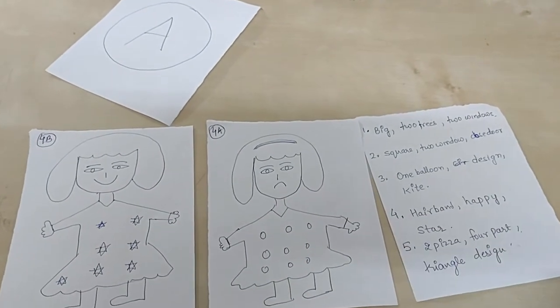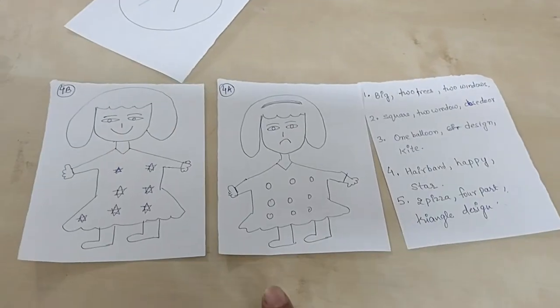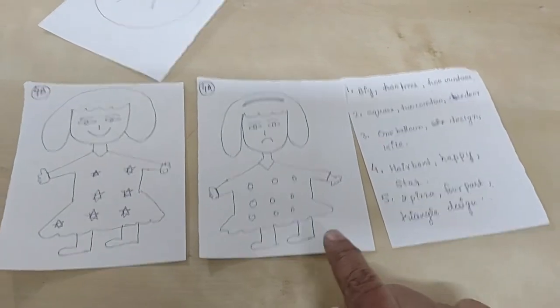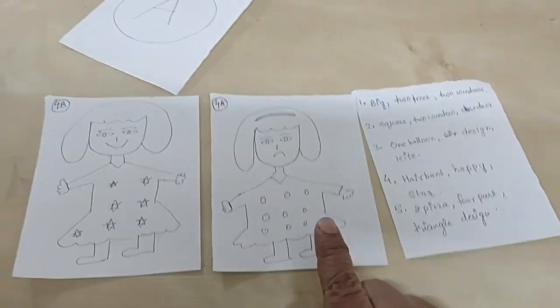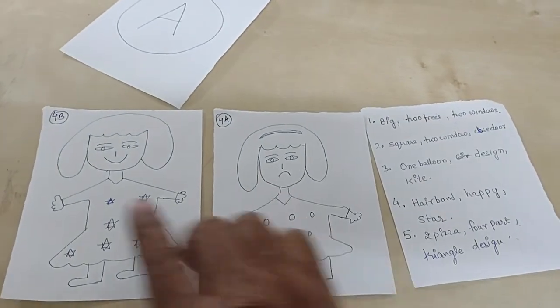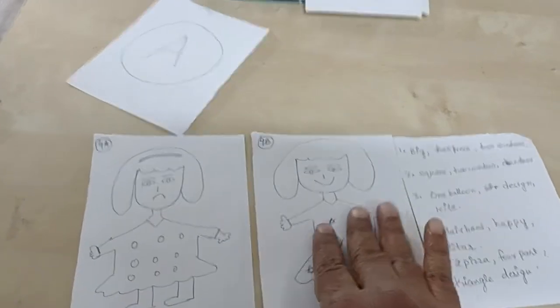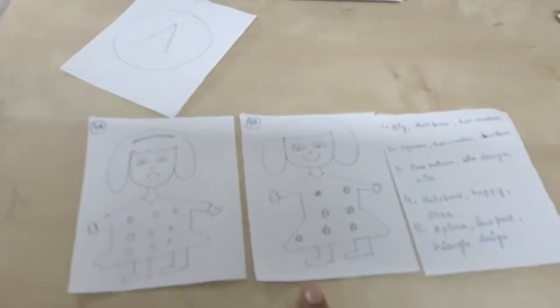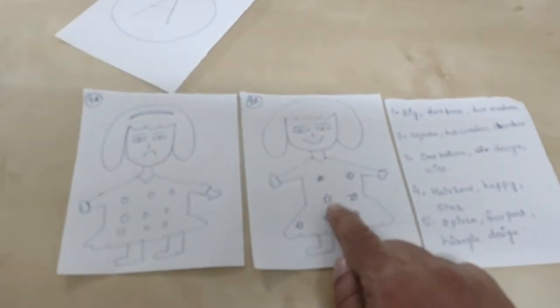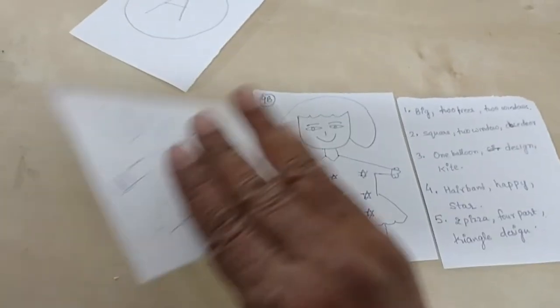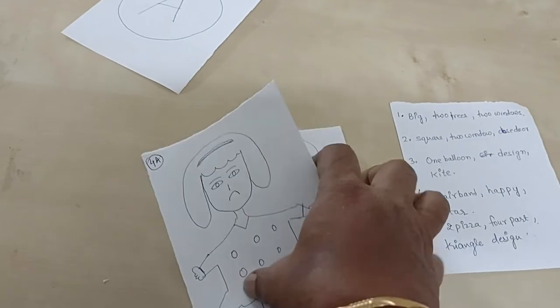The first done by the child, then second by the parent, then third by the child and then the parent. Like this, like in this picture, the child will say B girl has no hair band, B girl is happy, B girl's dress has a star design.